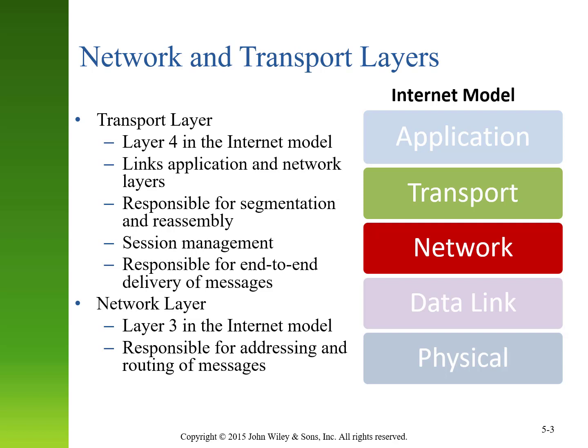The network and transport layers are layer 3 and 4 in the internet model, and they reside just below the application layer and above the data link layer. They are responsible for how we decide traffic moves across a network.